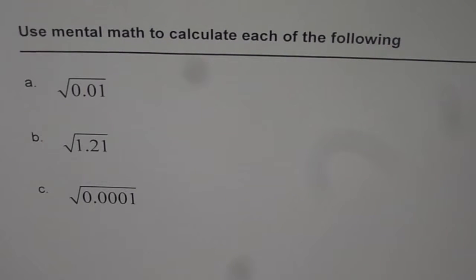Here is a practice test question for you. Use mental math to calculate each of the following square roots of decimal numbers. The first one is square root of 0.01, second is square root of 1.21, and the last is square root of 0.0001.